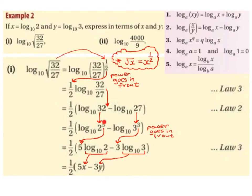Next, we bring the powers down in front following Law 3 — the 5 comes down in front of the first log and the 3 comes down in front of the second log. Law 3 says log base a of x to the power of q gives us q log base a of x. So we still have a half multiplied by 5 log base 10 of 2, minus 3 log base 10 of 3.